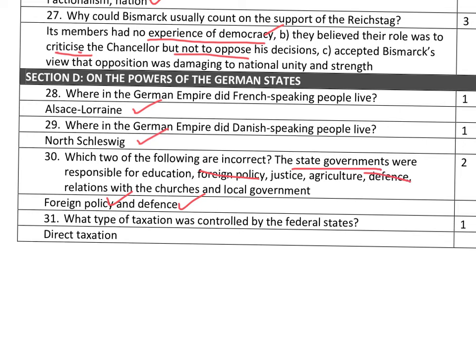And finally, question thirty-one — the flip side of the earlier question: what type of taxation was controlled by the federal states? The answer was direct taxation. Some of you put income tax, but I was looking for direct taxation specifically, and I was consistent in the way I marked that across all the answers.